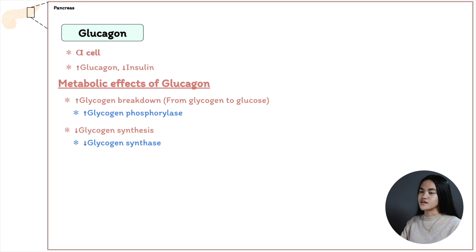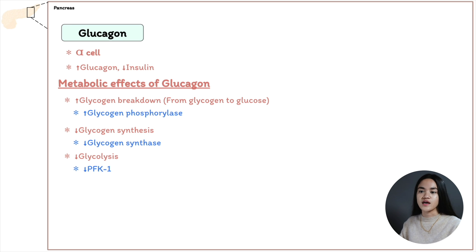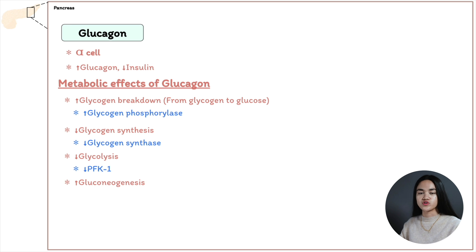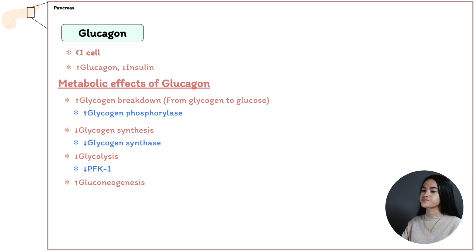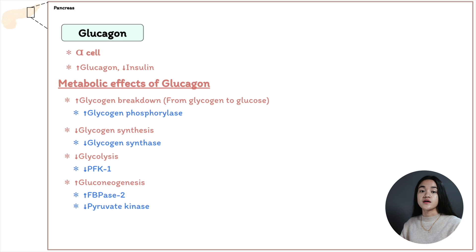Glucagon also inhibits glycolysis by inhibiting phosphofructokinase 1 (PFK1). On the other hand, it activates gluconeogenesis — the formation of glucose from non-carbohydrate sources such as pyruvate, lactate, amino acids, and glycerol. Glucagon increases fructose-2,6-bisphosphatase activity, increases PEP carboxykinase, and decreases pyruvate kinase activity.